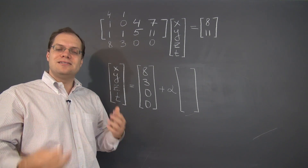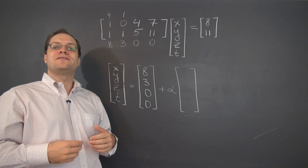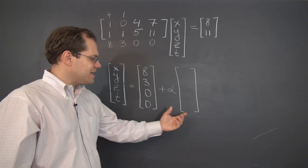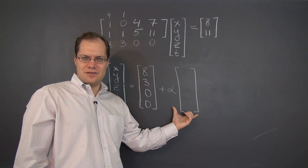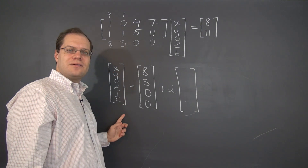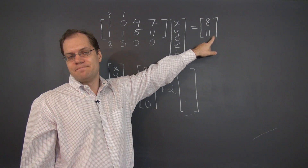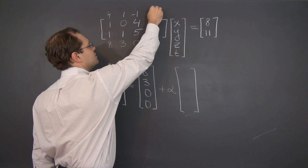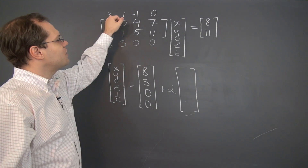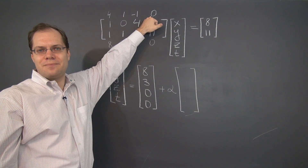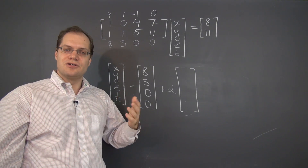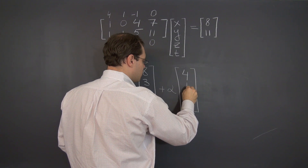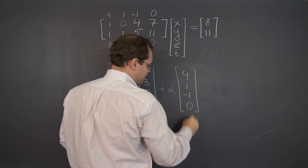But we're after the zero column — the non-trivial linear combination of columns that gives us zero, because it's throwing in that combination into the mix that changes the variables without changing the right-hand side. To accomplish that, we need to subtract the third column. We don't need to involve the fourth one. And now we have the non-trivial linear combination of columns that produces the zero column, which is our first element in the null space: 4, 1, negative 1, 0. Two-thirds of the way done.